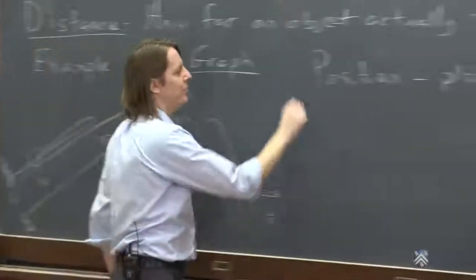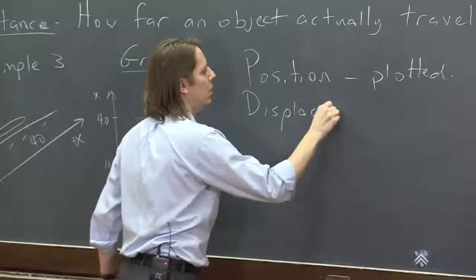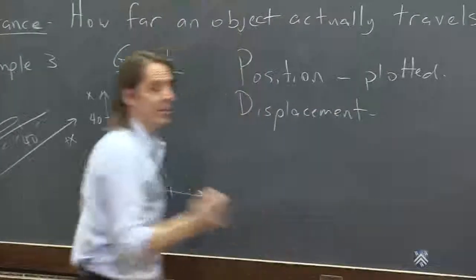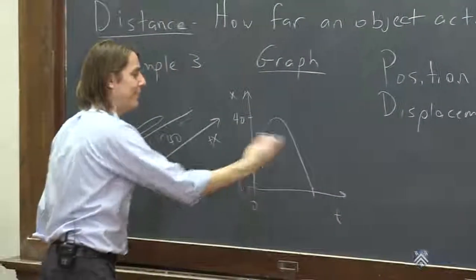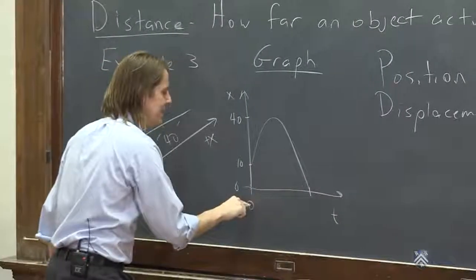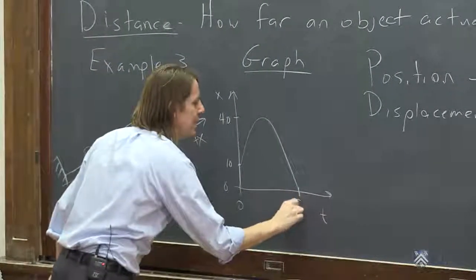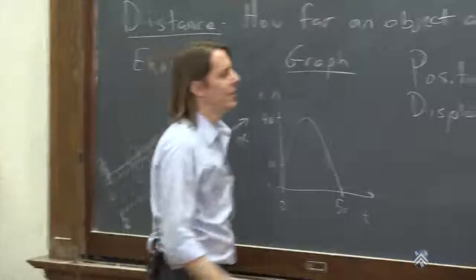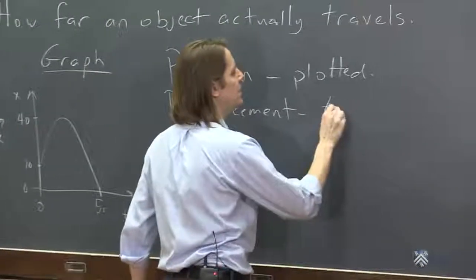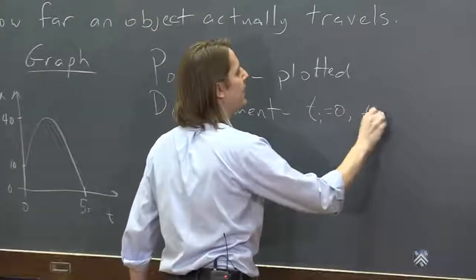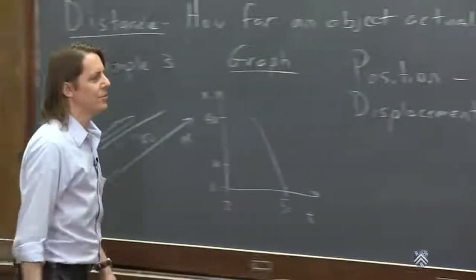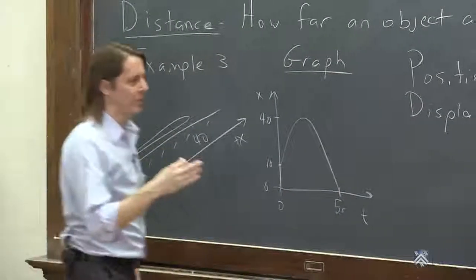To think about displacement, we need an initial time and a final time. So we're going to say it was at t equals zero, and we'll call this t as five seconds. So we have t initial equals zero, t final equals five. But we don't even really need the times, because all we really care about is the displacement.